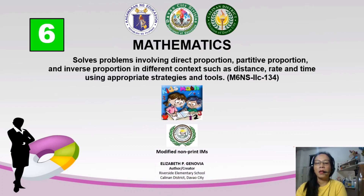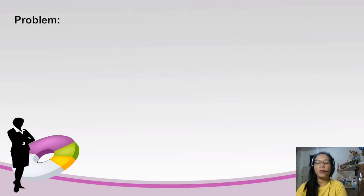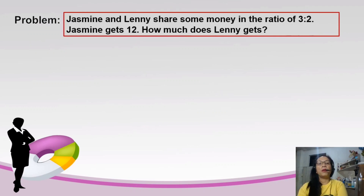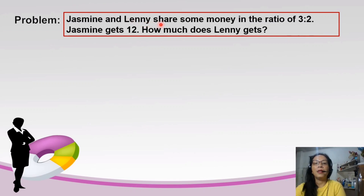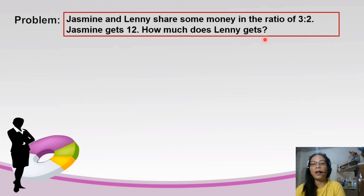Yours truly, Elizabeth P. Hinovia, the author and creator of this modified non-print materials. Let's begin. We have here a problem: Jasmine and Lenny share some money in the ratio of 3 is to 2. Jasmine gets 12. How much does Lenny get? So we are going to find the share of Lenny.